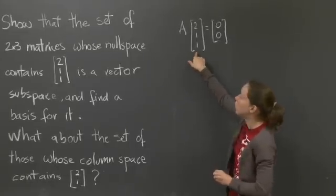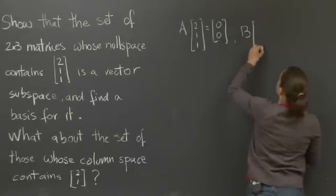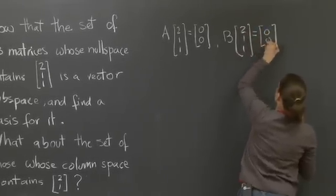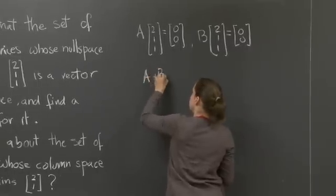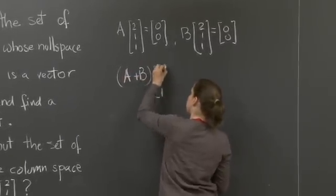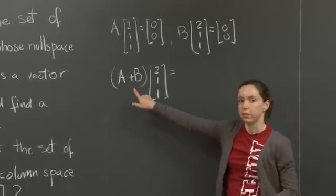Suppose that 2, 1, 1 is in the null space of A, and that 2, 1, 1 is also in the null space of B. Then what is A plus B times 2, 1, 1? Is 2, 1, 1 in the null space of A plus B?